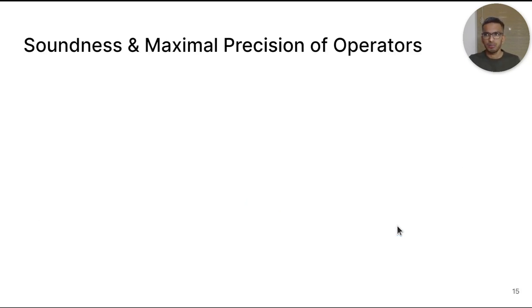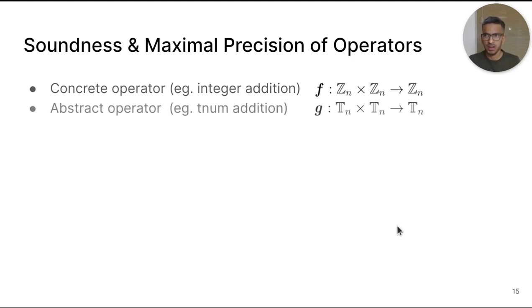The construction using composition described in the previous slide is a sound way to implement an abstract operator. But what is the meaning of soundness? Let's say we have a concrete operator F. This could be addition, subtraction, etc., which takes 2 integers and produces an integer. We are trying to define an abstract operator G corresponding to F, which takes as input 2 TNUMs and produces a TNUM. Let's see what the soundness criteria is for such an operator.